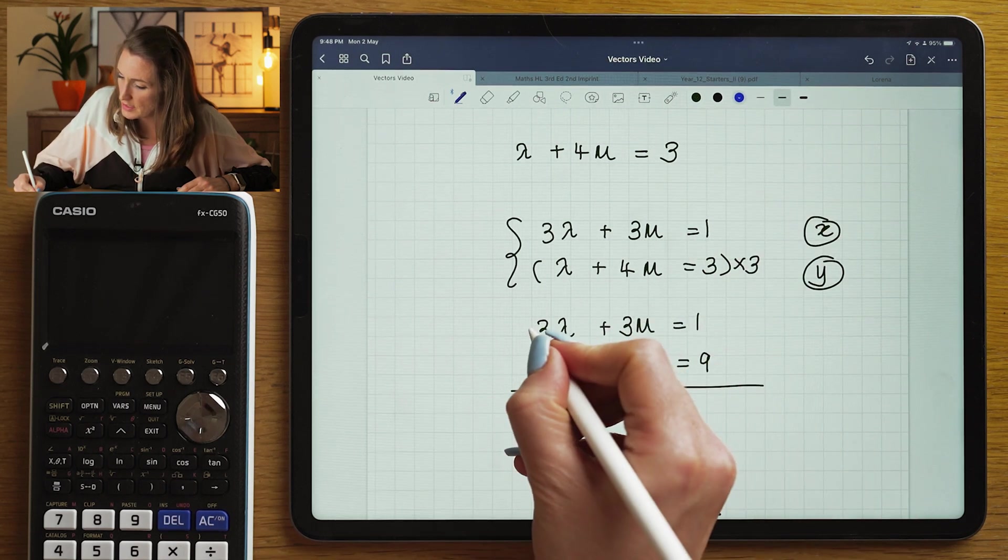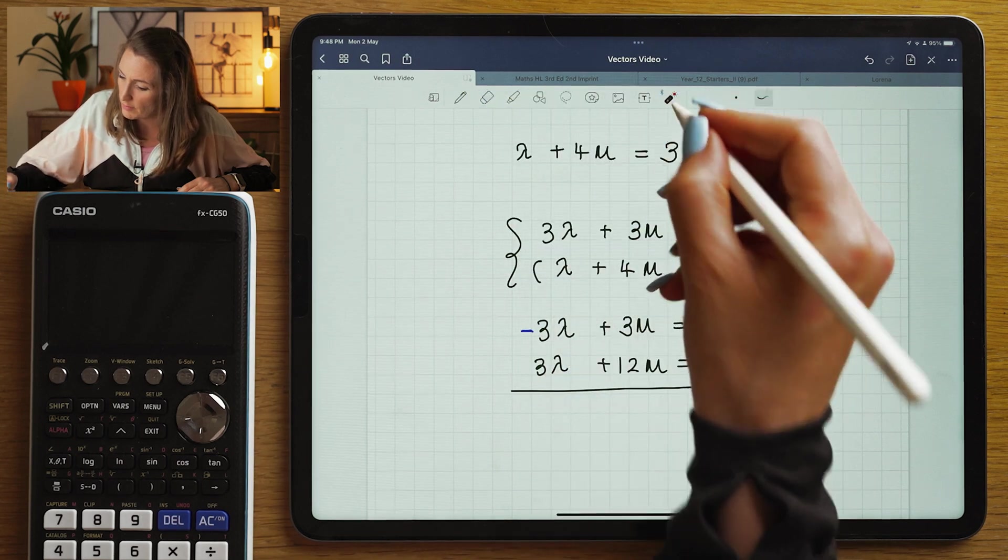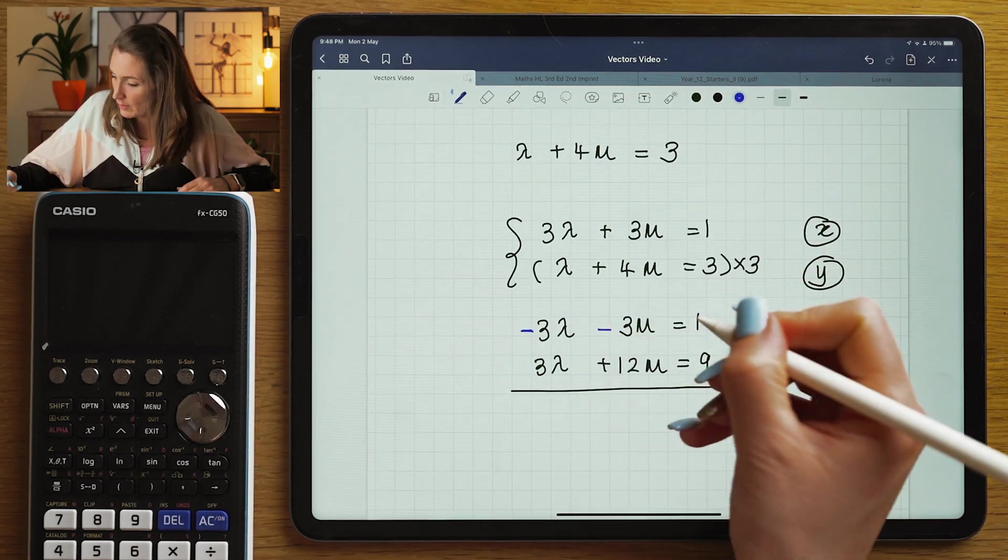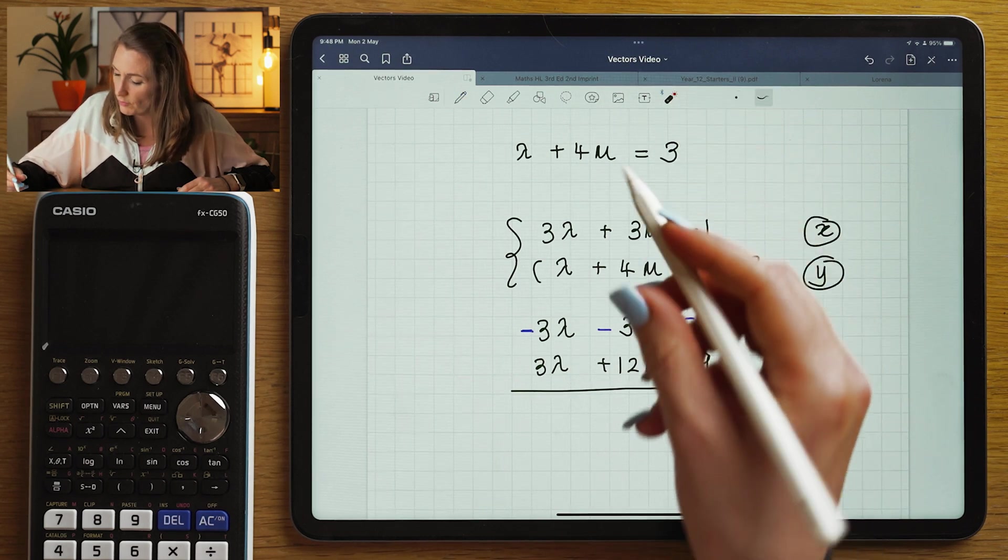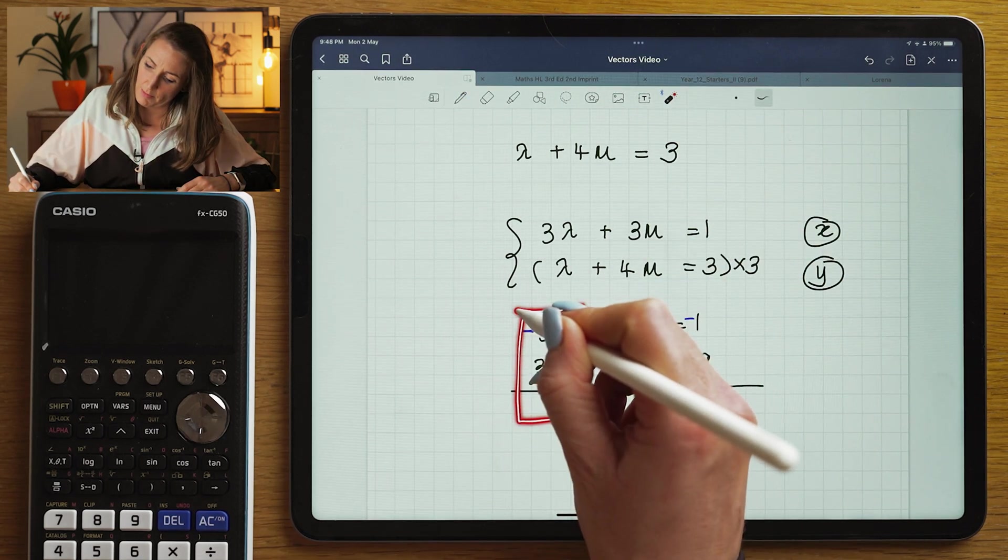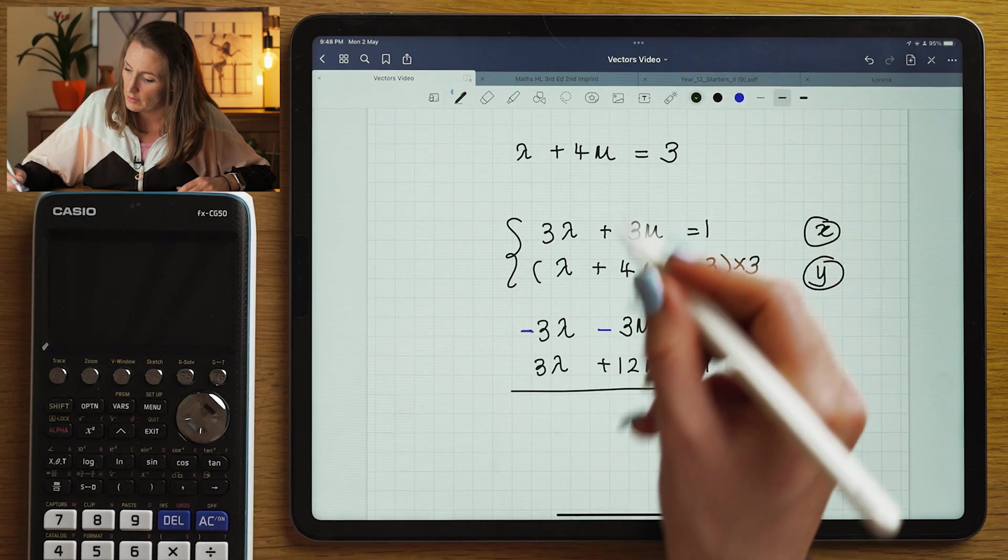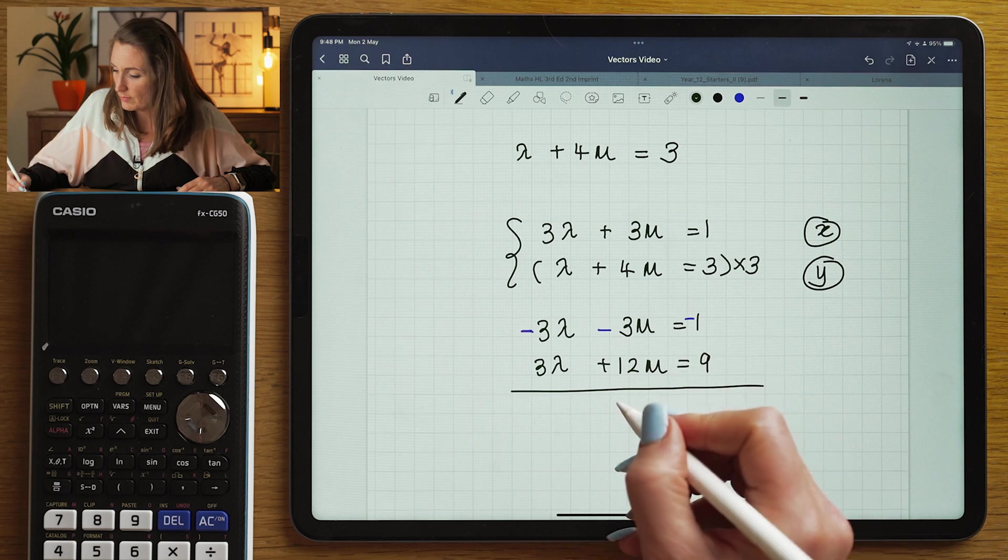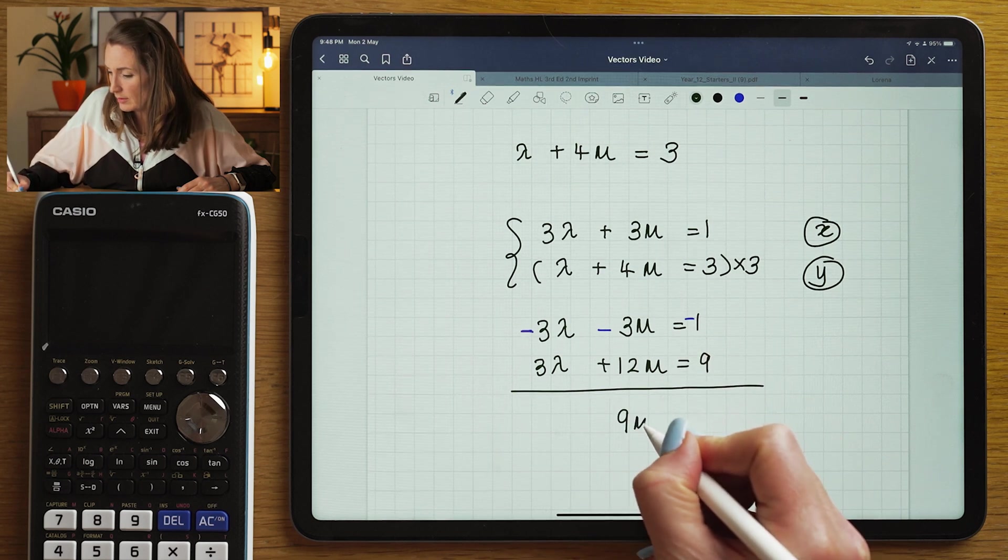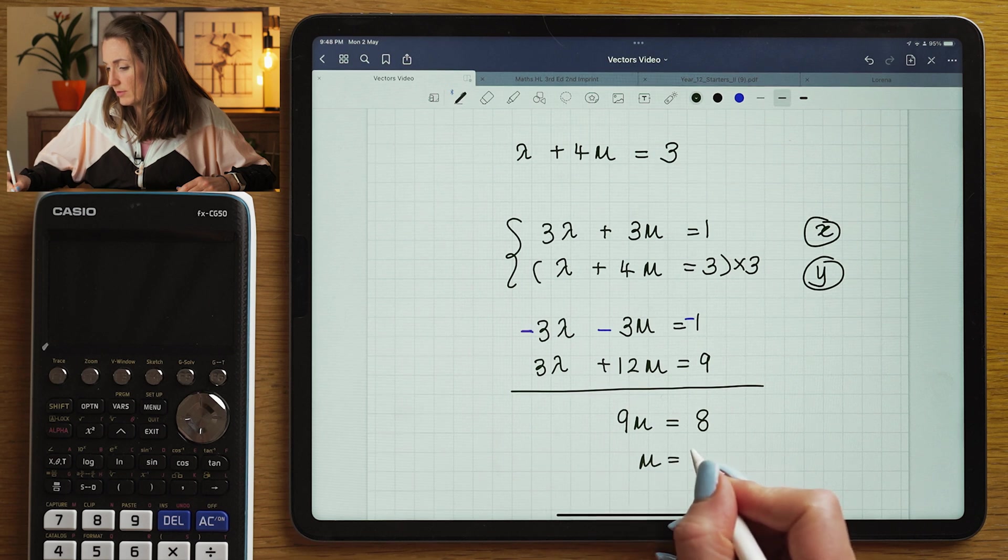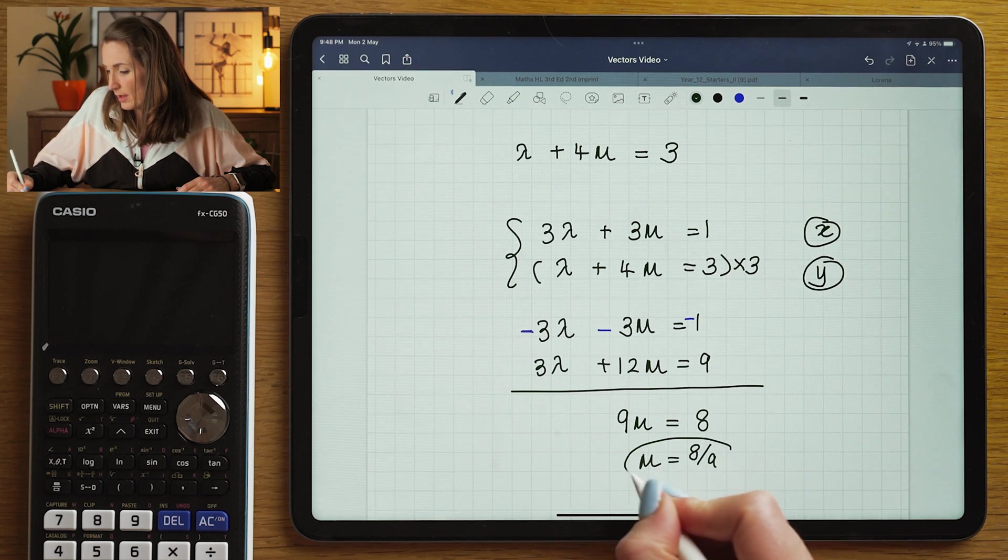So I'm going to change the signs on the top, so I've got a plus and a minus. What I'm generally looking for for simultaneous equations is to have, for example, a plus and a minus so these will eliminate when I add them together. So this will now be 0 lambda, this will be 9 mu and this would be 8. So I would get mu is equal to 8 divided by 9.